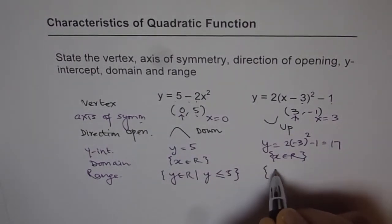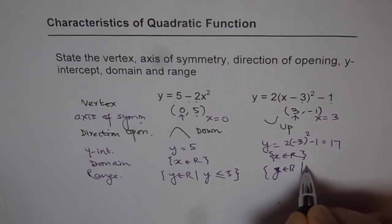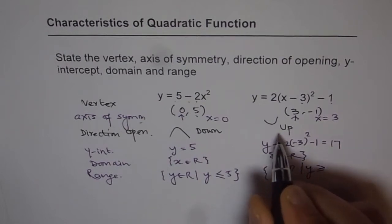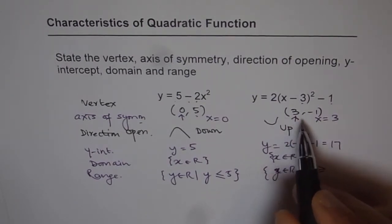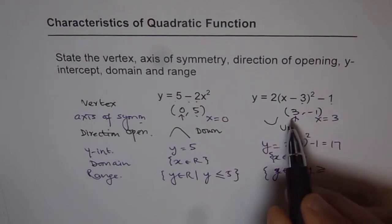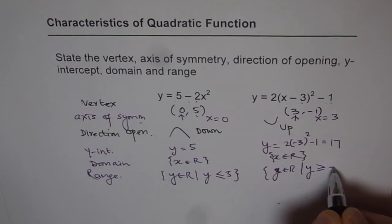In the second case, y belongs to real numbers where y is greater than equal to since it opens upwards. The minimum value. And minimum value for this function is, let's look at the vertex, 3 minus 1. That is the minimum value, minus 1.